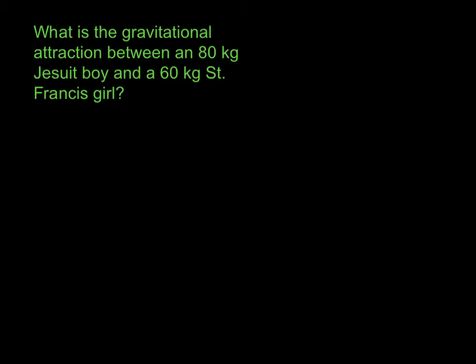So like we said before, gravitational attraction, gravitational force, law of universal gravitation happens between any two objects that have mass. So a boy and a girl, they have mass. Let's say they are separated by 0.5 meters. That's pretty close. That's like half a meter stick. So let's see what kind of attraction that is.